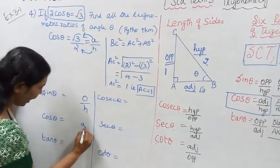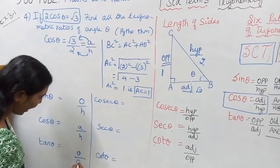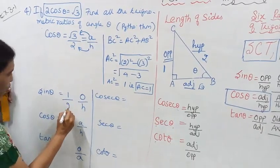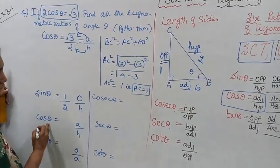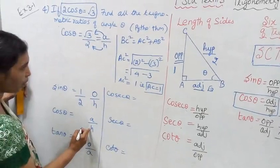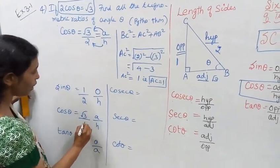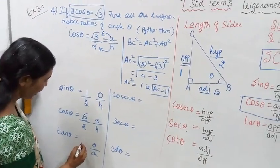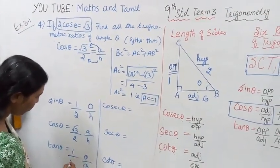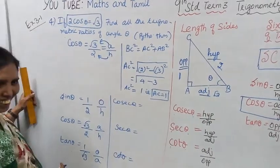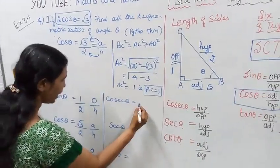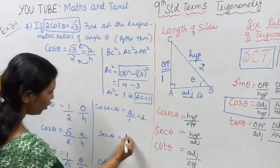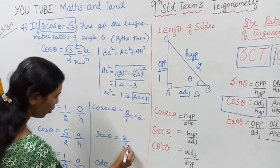So at the triangle: opposite is 1, hypotenuse is 2, adjacent is root 3. Sin theta equals opposite by hypotenuse = 1 by 2. Cos theta equals adjacent by hypotenuse = root 3 by 2. Tan theta equals opposite by adjacent = 1 by root 3. Cosec theta = 2 by 1 = 2. Sec theta = 2 by root 3.